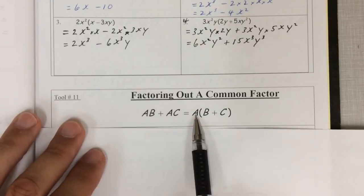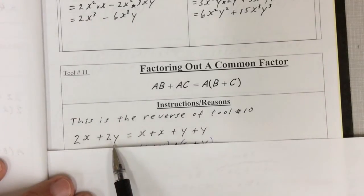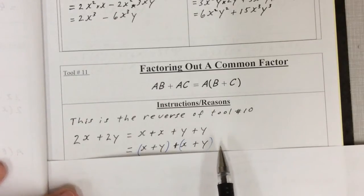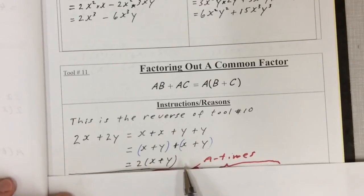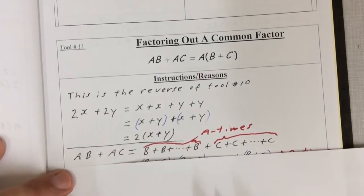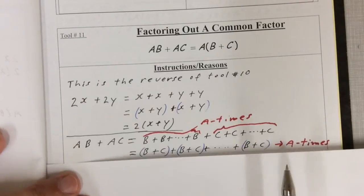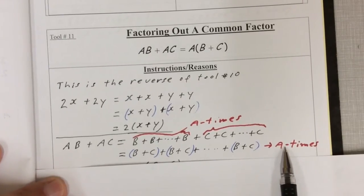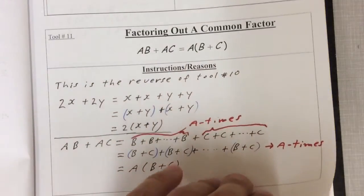a times b plus a times c — you can factor out the a. This is the reverse of tool 10. So 2x plus 2y, where 2 is the common factor a, equals x plus x plus y plus y. Putting the x's and the y's together: x plus y plus x plus y — we have two groups of x plus y. Same thing with the unknown a: a times b plus a times c, that's a b's and a c's. For every b, put a c with it, and you have a of them — so a times b plus c, because you have a groups of b plus c.